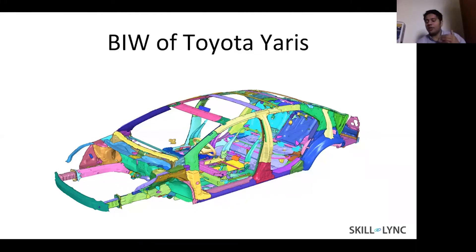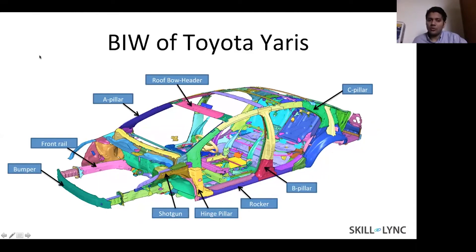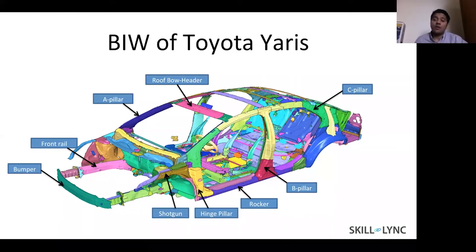One of the things that people do is look at individual components, because design and optimization is done on individual parts in a company. The types of components that people look at include bumper safety, front rails, shotgun, hinge pillar, ABC pillars, and roof bow headers. These are all components designed for crashworthiness because they dictate how energy is going to dissipate from the impact zone around the passengers.